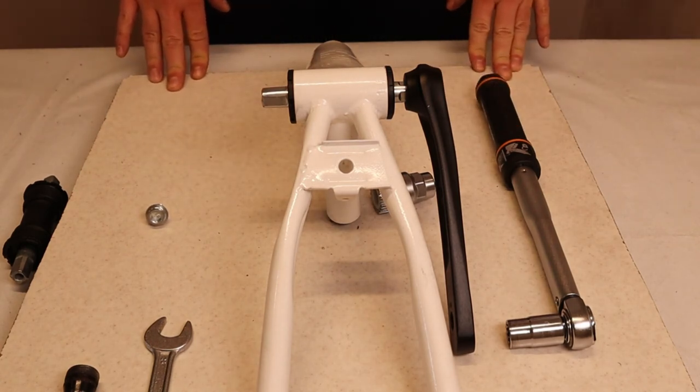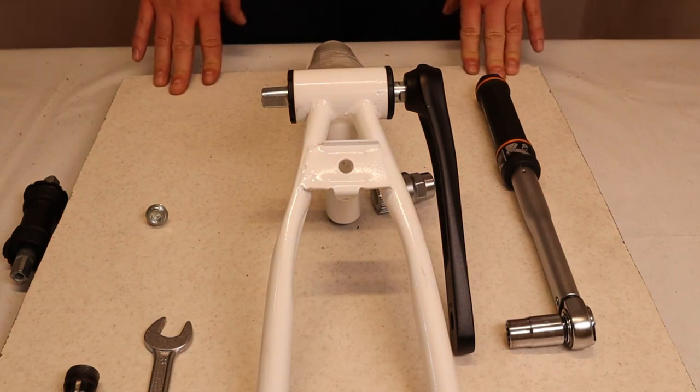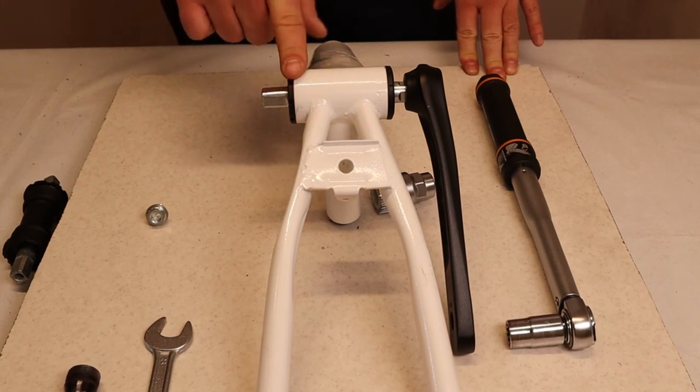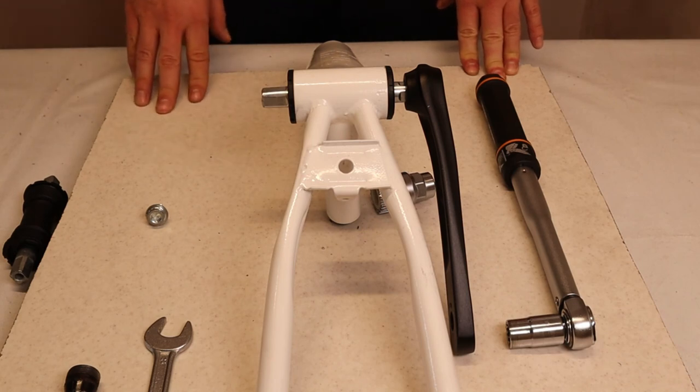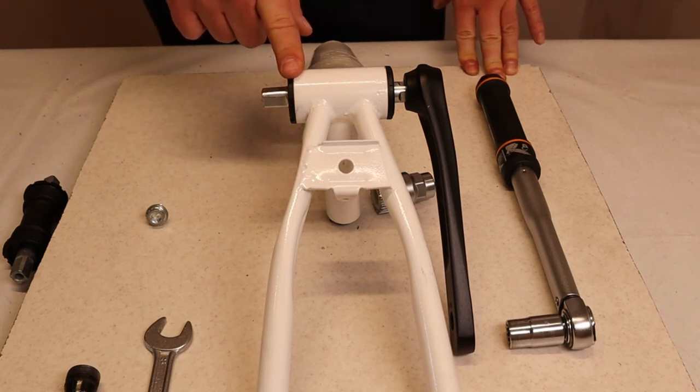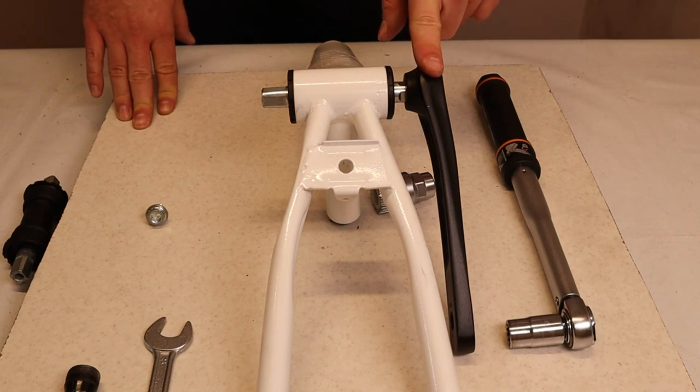So that's the correct assembly process with the torques and the grease use. So once again to recap everything no grease on the threads or on the cups no grease on the spindle. Torque for the cups is 30 to 35 newton meters and torque for the crank is 45 to 50 newton meters.